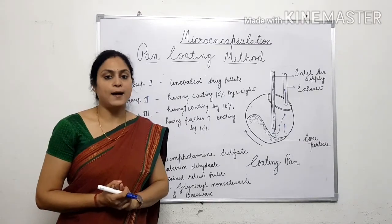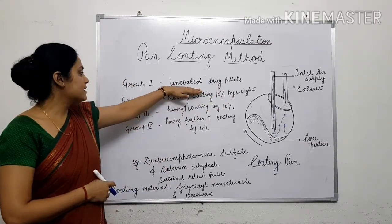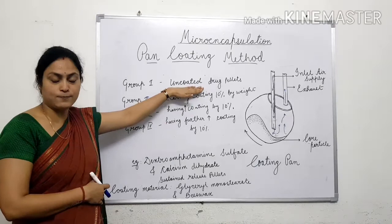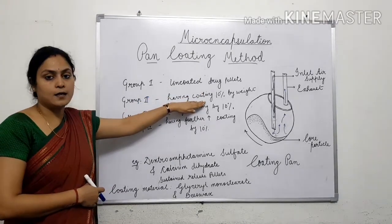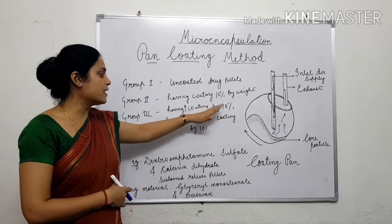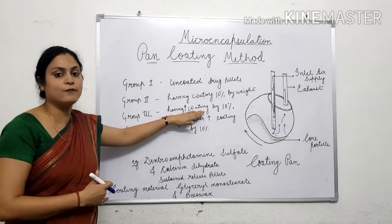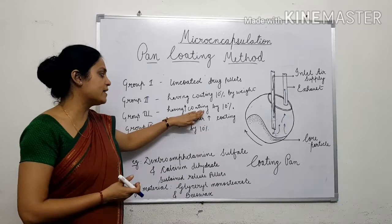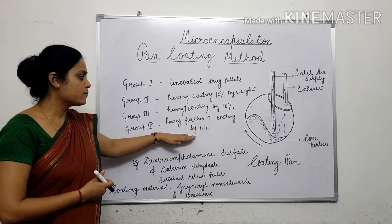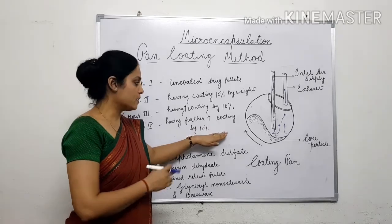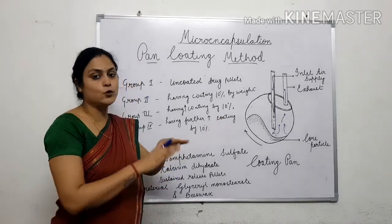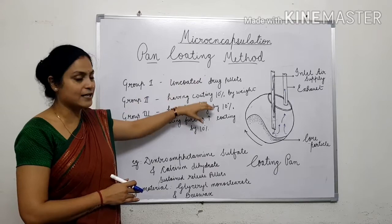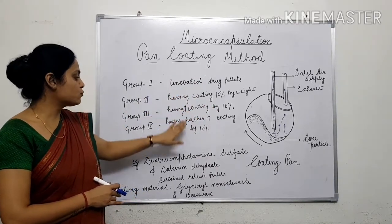Group 1 pellets have no polymer coating — only drug over the inert substrate. Group 2 pellets have coating up to 10% weight increase. Group 3 pellets have coating with a further 10% weight increase. In Group 4, coating material is added up to a 10% increase in weight over Group 3's level. So the thickness of the coating is gradually increasing from Group 1 to Group 4.